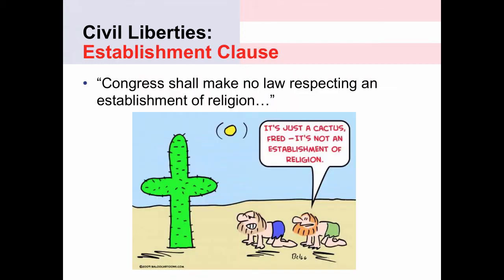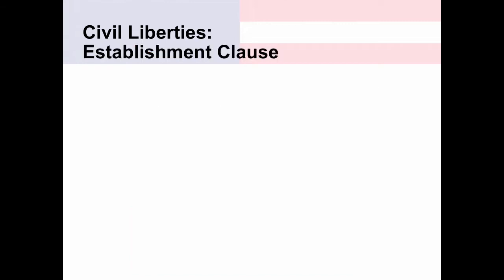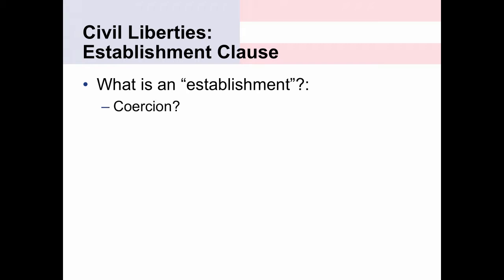Let's start with the Establishment Clause. The First Amendment says, quote, Congress shall make no law respecting an establishment of religion. Now, what does establishment mean? That becomes one of the central questions for the Supreme Court. Does establishment require coercion? In other words, would government taxing a certain religious view be coercive in trying to influence people to not adhere to that religion or to adhere to other religions?